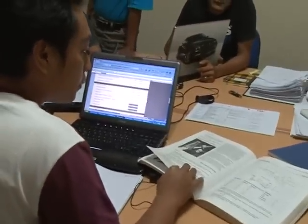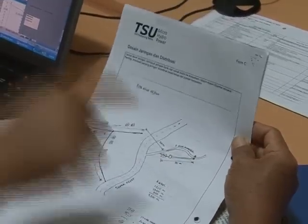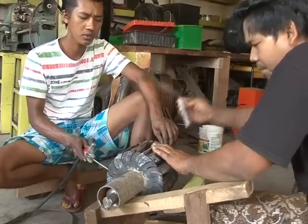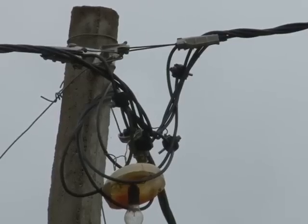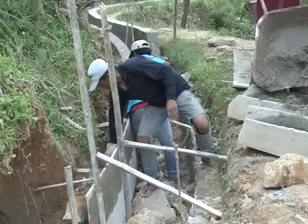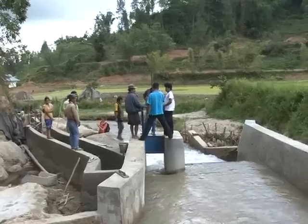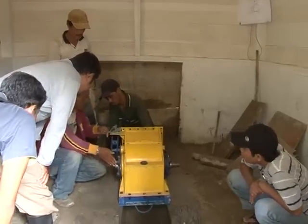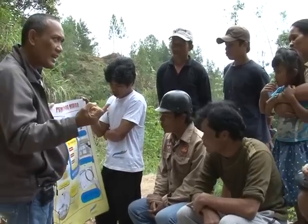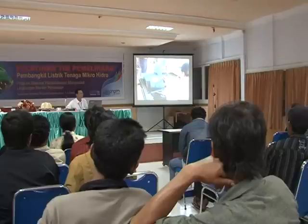Following the feasibility study, a detailed MHP construction design will be produced. According to the design, civil structure construction, turbine construction, and customer grid installation will be done. Good construction with standardized equipment will make the MHP last longer and perform better. From the planning stage until the MHP is installed, community involvement is needed so that the community will be prepared to manage and use the MHP.